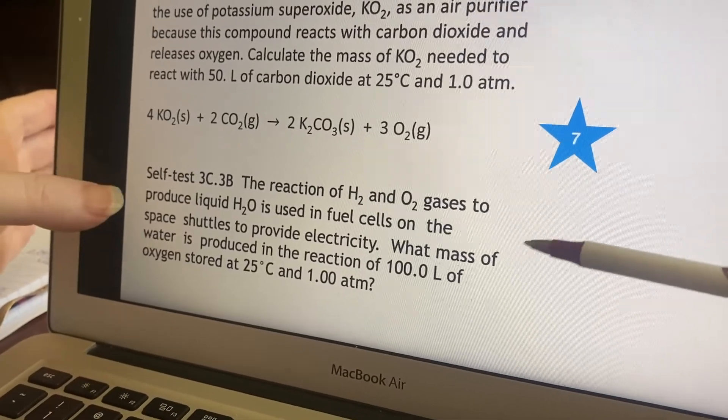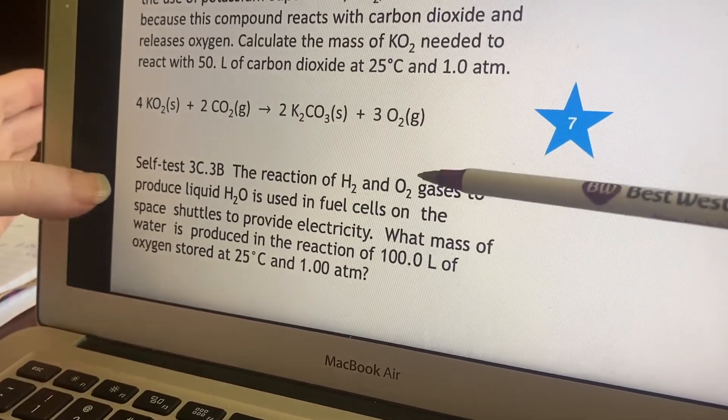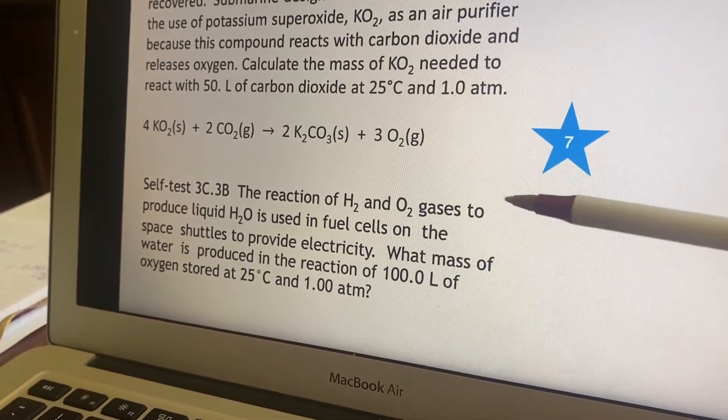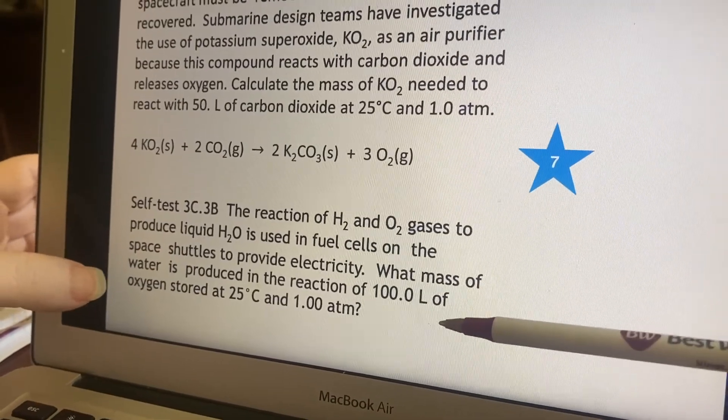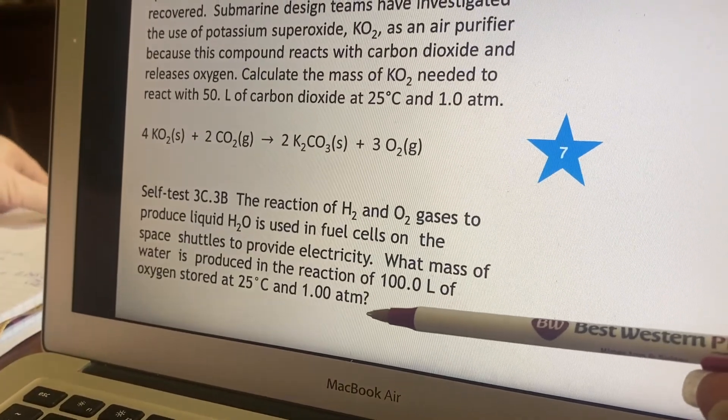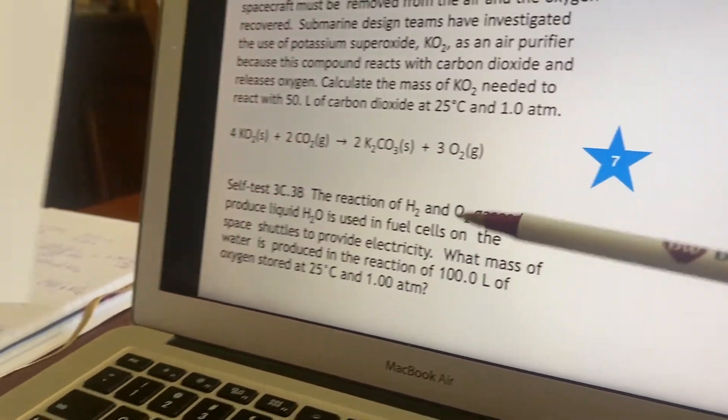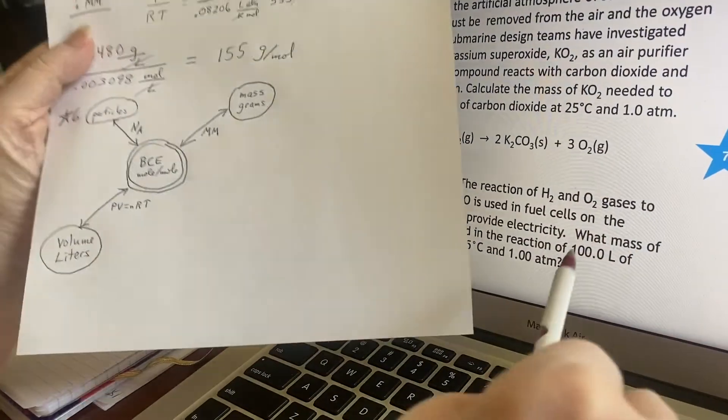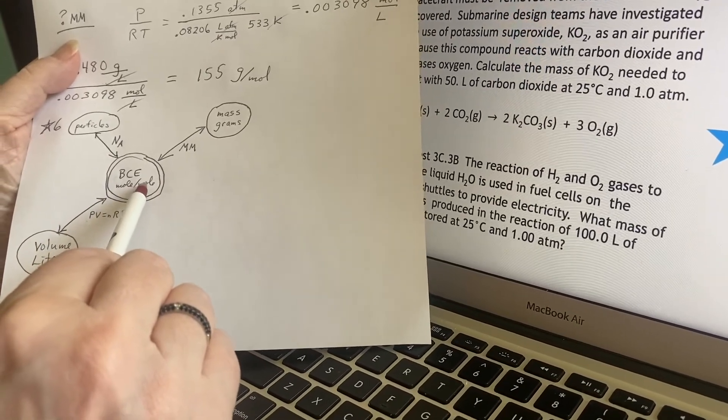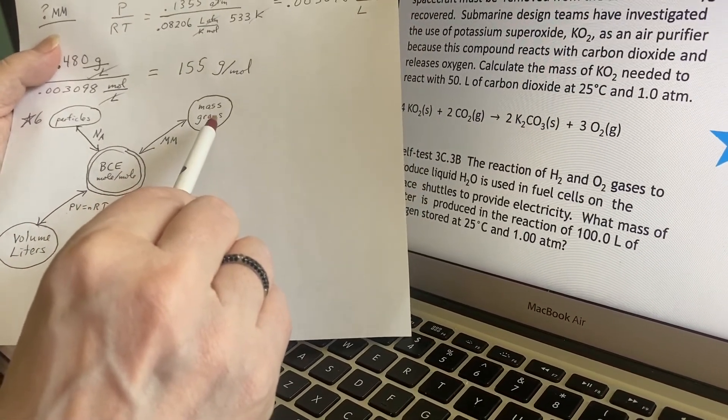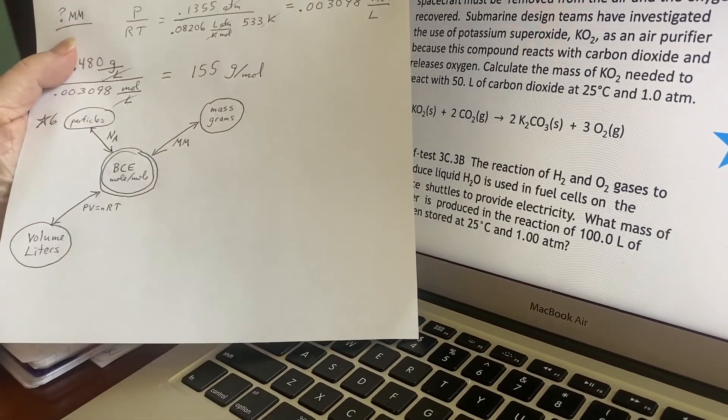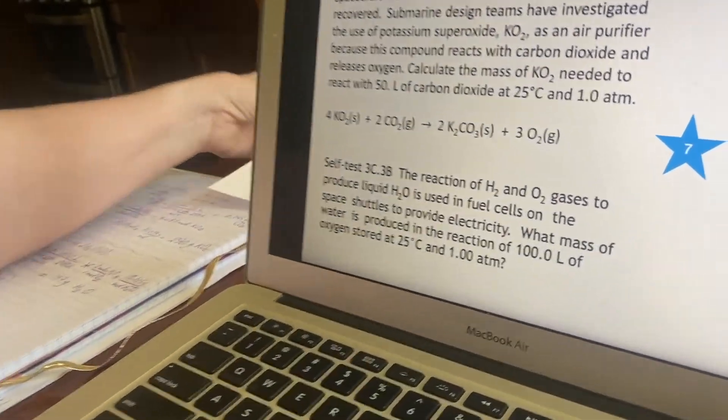Here's another one. Reaction of hydrogen and oxygen gases to produce liquid water. Again, used in spaceflight. What mass of water, so they're asking for mass, is produced in the reaction of 100 liters of oxygen stored at it? So what are we back to? They're telling us something about that we have a certain number of liters. There is a particular balanced equation that goes with this, and we want to know what the mass is that's produced. So we're going to use this arc in this graphic again.